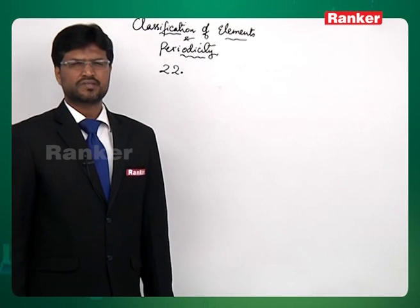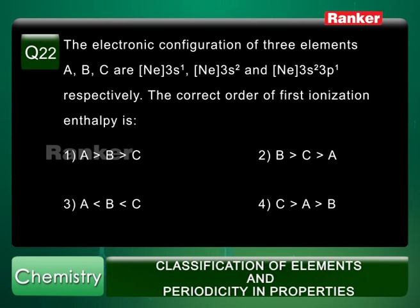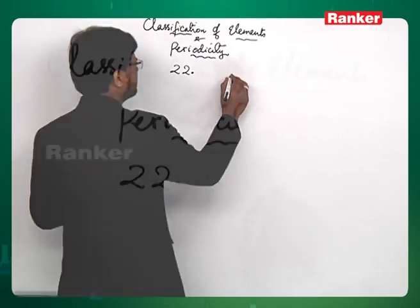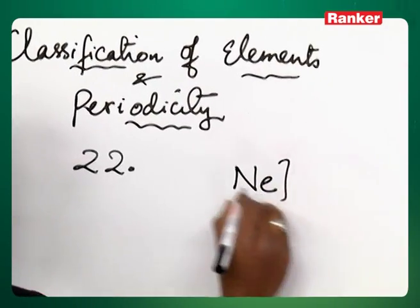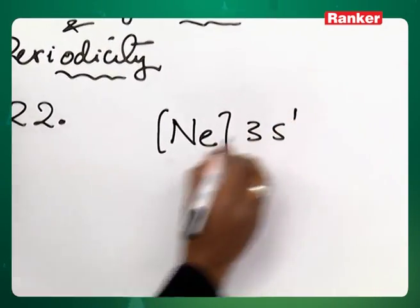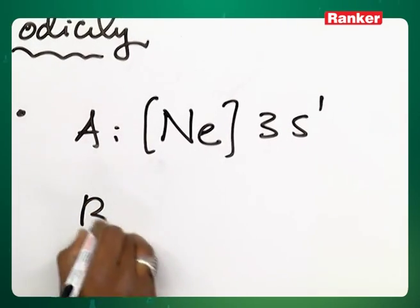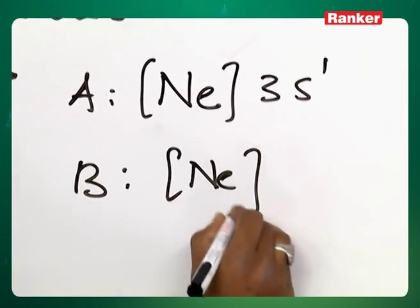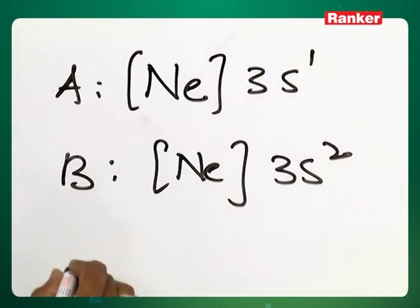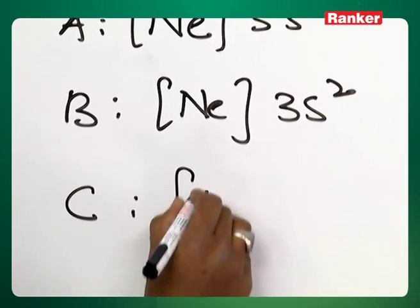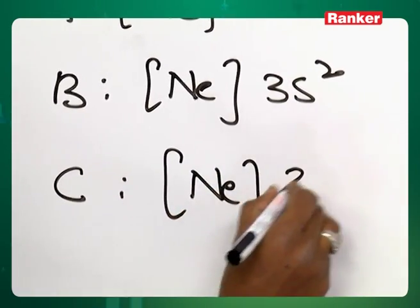Question number 22. The electronic configuration of three elements A, B and C are Ne 3s¹, Ne 3s² and Ne 3s² 3p¹ respectively. The correct order of first ionization enthalpy: element A is Ne 3s¹, element B is Ne 3s², and element C is Ne 3s² 3p¹.